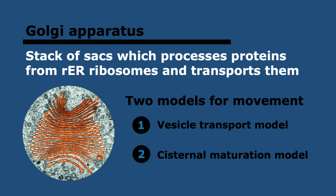There are two models for how proteins move through the Golgi cisternae. One is the vesicle transport model, which says that the cisternae do not move and vesicles transfer proteins between them — imagine a protein gets into a vesicle, goes to the next cisterna, and so on. Then there's the cisternal maturation model, which says that vesicles from the ER form new sacs, slowly displacing the Golgi forward — so it's the Golgi that moves rather than the proteins themselves.